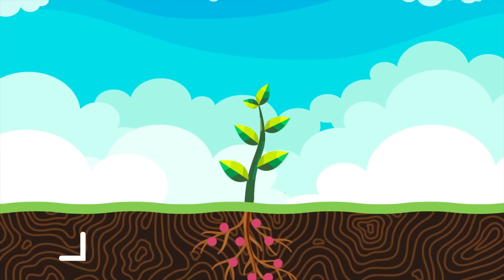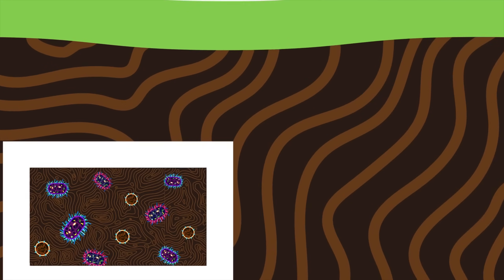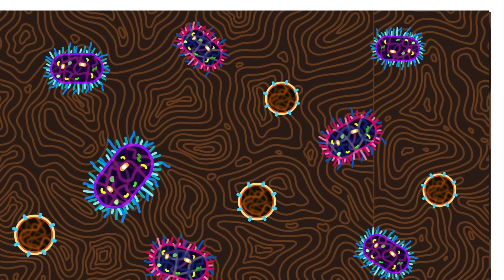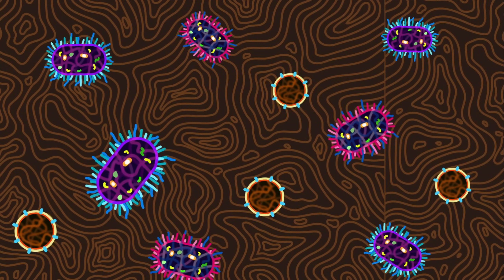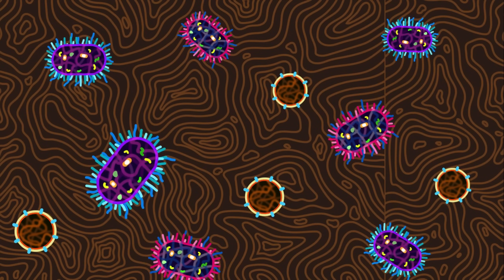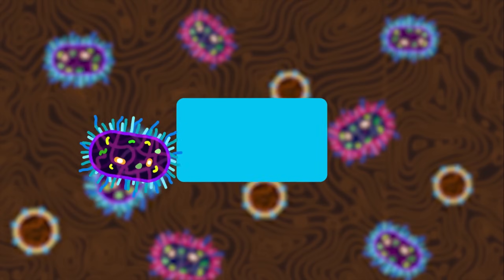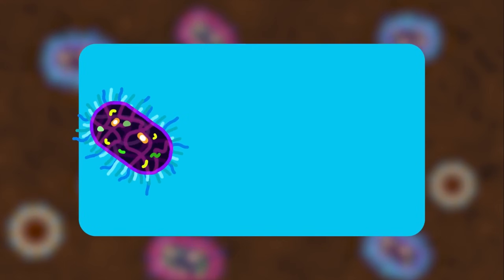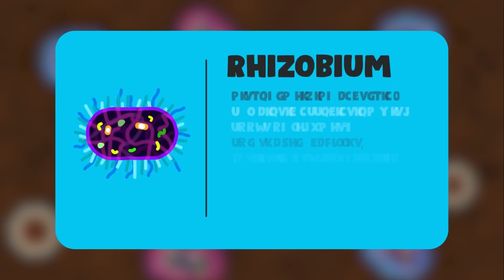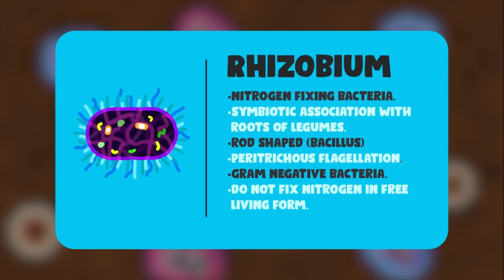In this video, we are going to see how these associations are produced. The soil usually contains thousands of bacteria in free-living forms. Some of these bacteria might belong to the genus rhizobium, which can be identified by rod-shaped cells having multiple flagella and being gram-negative in nature. These bacteria can exist in soil in free-living forms but are not able to fix atmospheric nitrogen in that state.